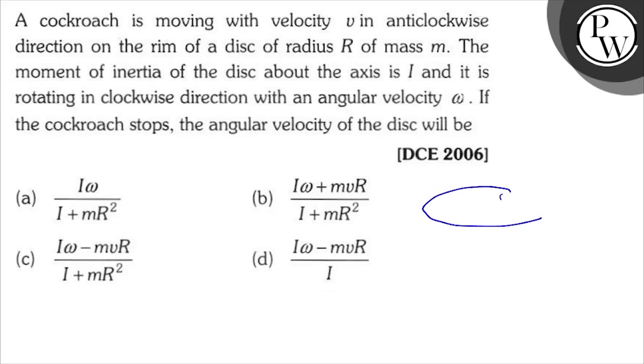So let's say this is your disk. On the rim, the cockroach is moving - this insect of mass m. How is it moving? Anticlockwise. And how is the disk rotating? It's rotating clockwise. The disk is rotating clockwise, okay?